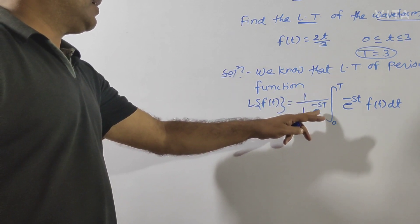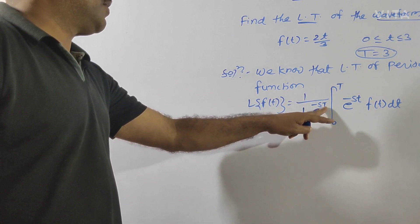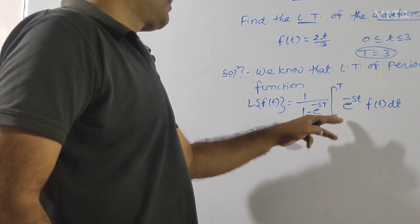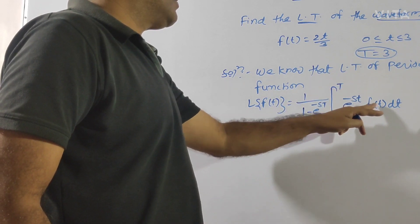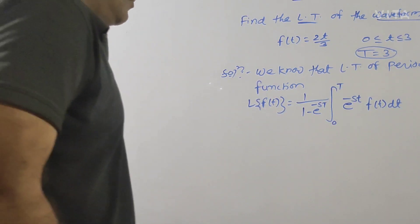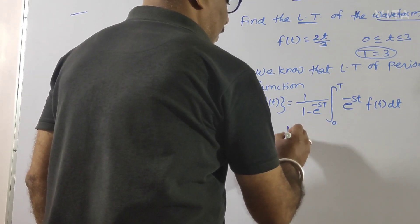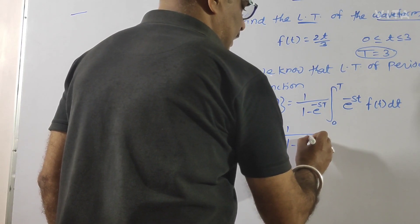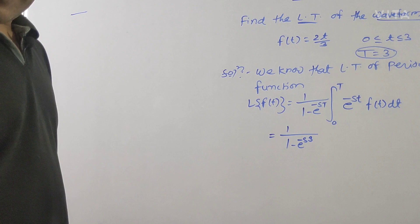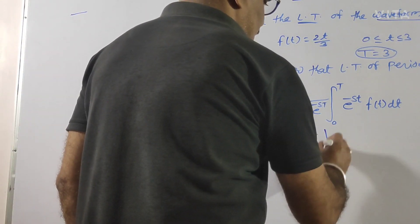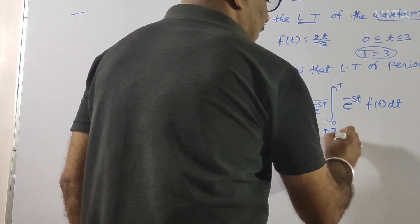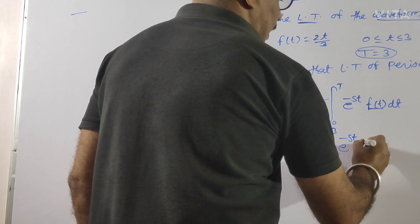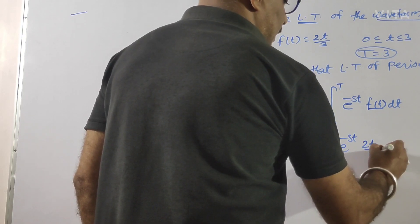L{f(t)} = 1/(1 - e^(-sT)), जिस cycle में वो अपनी position को repeat कर रहा है, और यह 0 to T रहेगा, e^(-st) f(t) dt. यहाँ देखिए, T = 3, तो 1/(1 - e^(-3s)) हो जाएगा, और 0 to 3 का integral, e^(-st) और f(t) की value 2t/3 और dt.